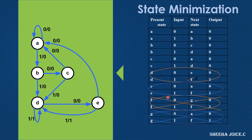By eliminating state F and state G, the seven states are reduced to five states. We can redraw the state diagram with only five states. Thus we have reduced the states, and this is the reduced state diagram.